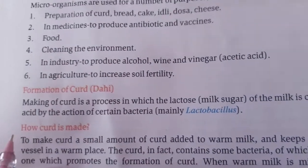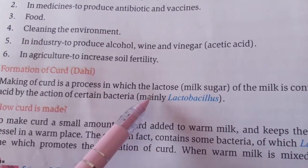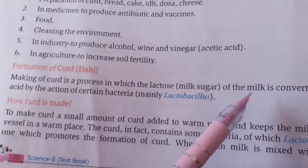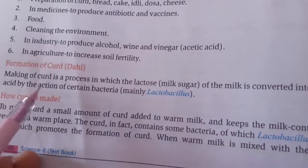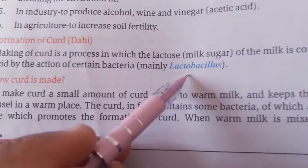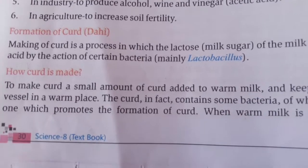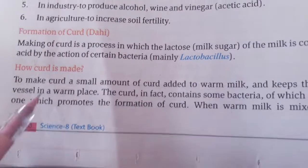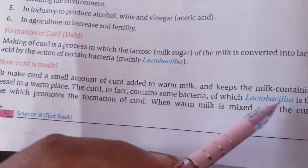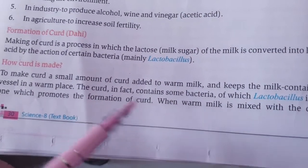Let us understand the formation of curd in detail. Bacteria convert milk into curd. The milk sugar — lactose — is converted into lactic acid by the bacterium Lactobacillus, which makes the milk sour. To make curd, warm the milk, let it cool slightly, then add a small amount of Lactobacillus bacteria as a starter.